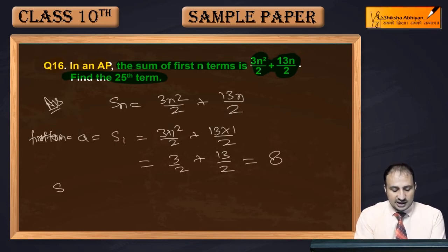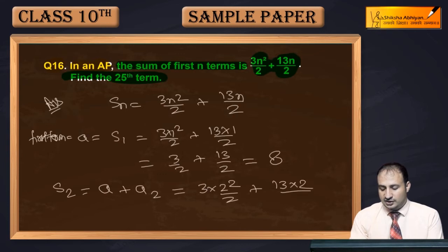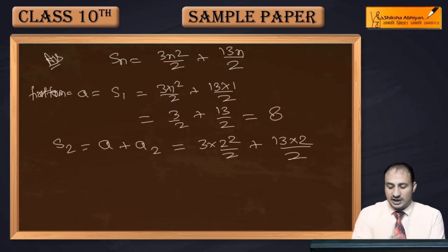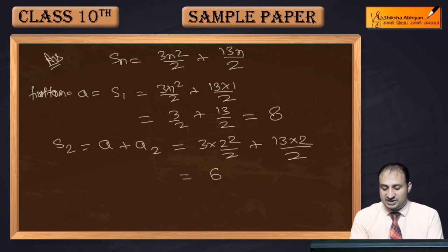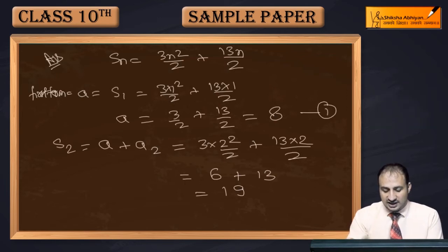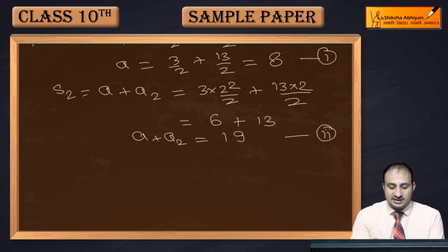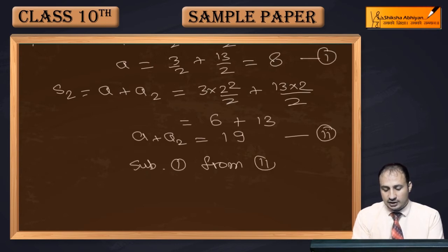Now if I find S2 — the sum of the first two terms (first term plus second term) — it equals 3×2²/2 + 13×2/2 = 6 + 13 = 19. So S1 gives us 'a', and S2 gives us a₁ + a₂. From this we can find the second term by subtracting the first from the second.